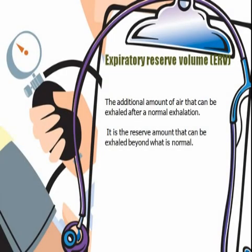Then expiratory reserve volume, or ERV, which is the additional amount of air that can be exhaled after normal exhalation. So when you have exhaled the tidal volume and all the air is gone, the additional capacity to exhale — the air remaining beyond the tidal volume that you can still exhale — is called the expiratory reserve volume.